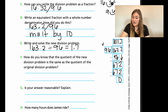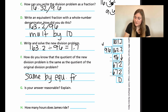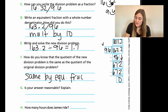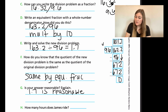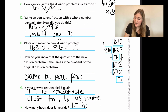For Part F: we know the quotient of the new division problem is the same as the original because of equivalent fractions. For Part G: yes, my answer of 1.7 is reasonable because it's close to my estimate of 1.6 from Part B. So James rode 1.7 hours total.